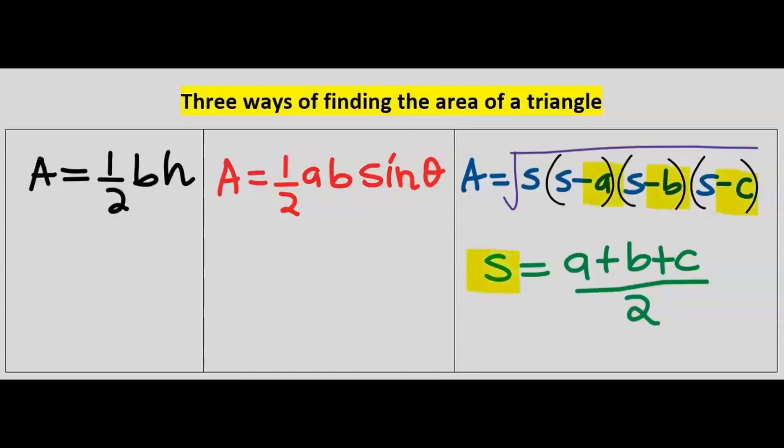Where S is the semi-perimeter, which is the addition of the three sides divided by two. Any of those can help you to find the area of a triangle.